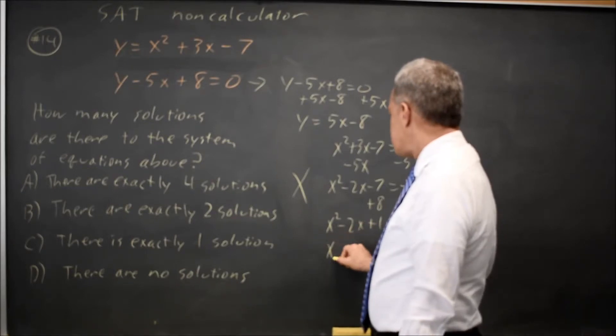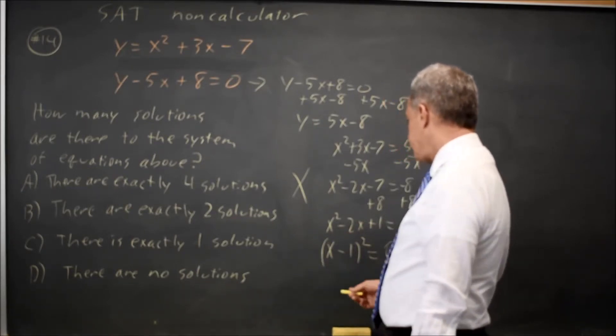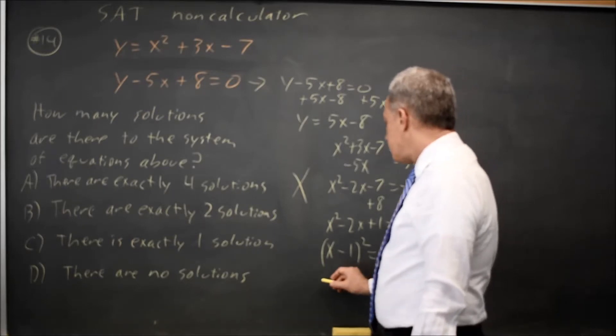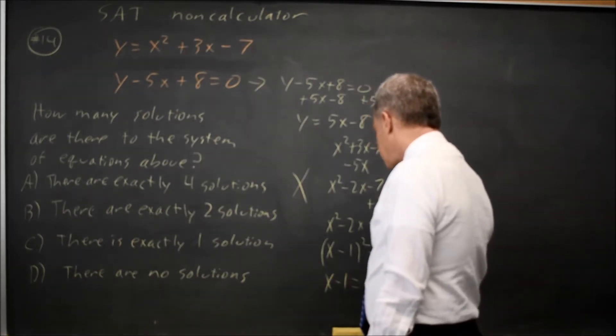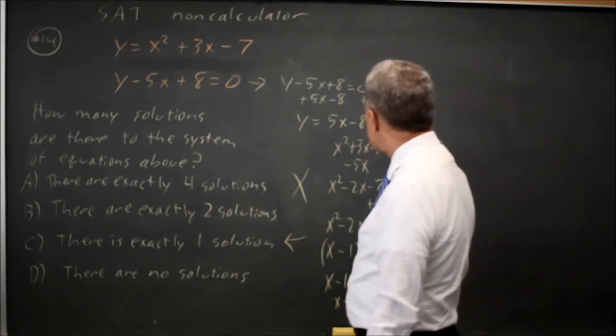This factors. That's x minus 1 quantity squared equals 0. And that squared equals 0 only at x minus 1 equals 0. x equals 1. We only have one solution.